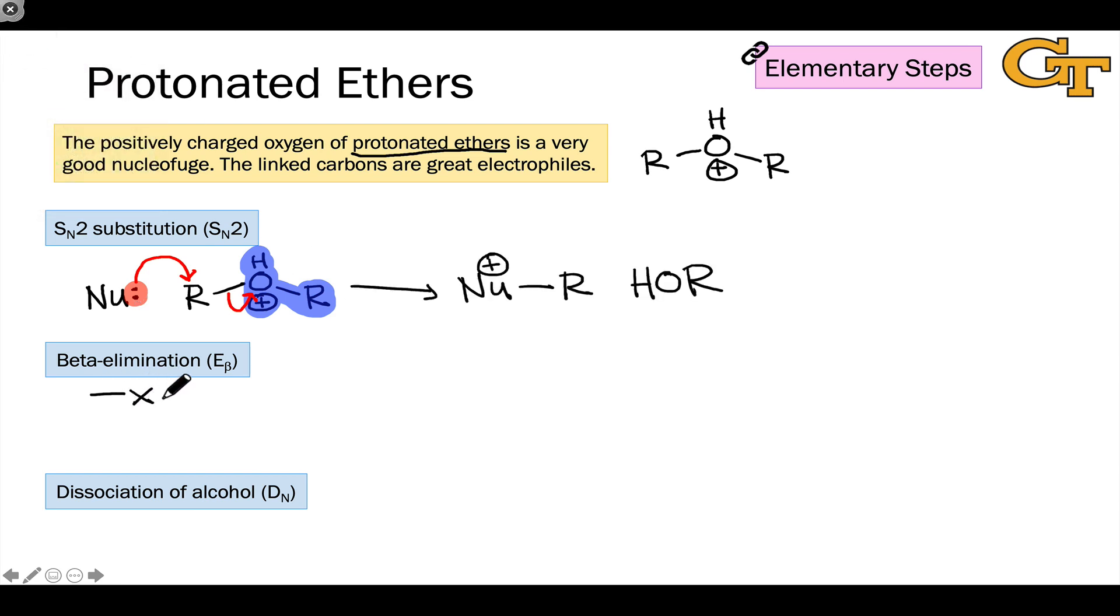In protonated ether type substrates, we can also observe beta elimination, which is highly analogous to the beta elimination that we saw on the last slide. Imagine we had a protonated ether that looked like this whose carbon group, one of the carbon groups, is connected to a heteroatom, and here I'm just keeping it general and denoting it as X.